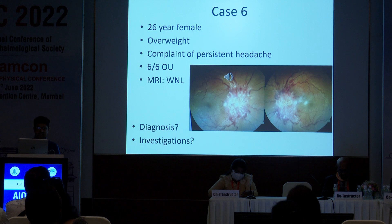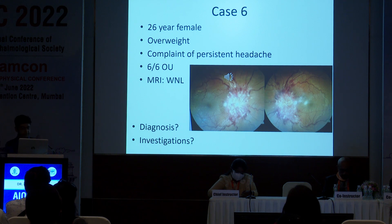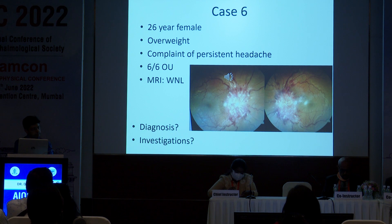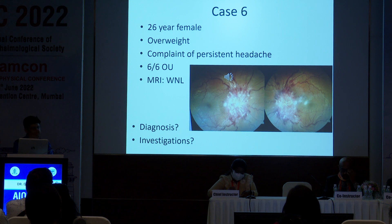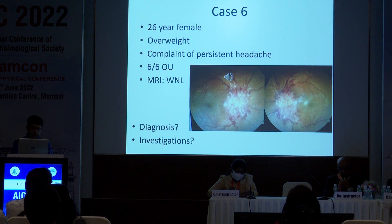Here is another young female who is overweight and has a history of headaches on and off, presenting with normal visual acuity but very swollen discs. You can see peripapillary hemorrhages and very swollen bilateral disc edema. The MRI is within normal limits, so this is likely to be idiopathic intracranial hypertension. You want to investigate by doing an opening pressure via lumbar puncture, and treatment would include acetazolamide or sometimes surgical optic nerve sheath fenestration or VP shunts.